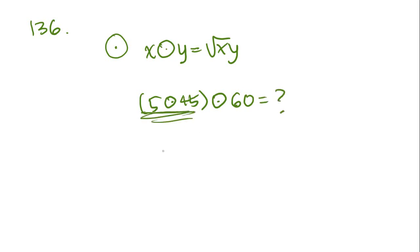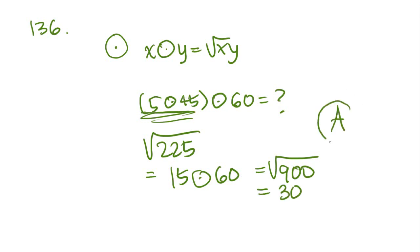136 just says if the operation, little target symbol here, is defined by x target y equals square root of xy. For all positive numbers x and y, then 5 target 45, target 60 equals what? Well, let's figure this one out first. Five times 45 is going to be 225. We square root that and we get 15. So, then we have 15 target 60. We multiply those together and square root them. And we have 900. And that equals 30. Answer choice A. And remember, whenever you see these weird symbols that the GMAT gives you, they're telling you that you have to follow a particular rule that they also give you. Remember, we're doing 5 target 45 first and that's why we ended up with 15 here. And then we plug the 15 back into the equation and that's how we got the 30.